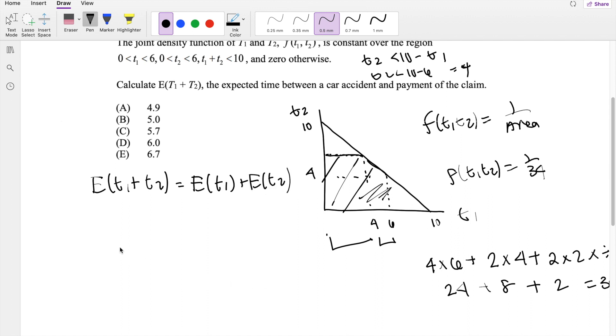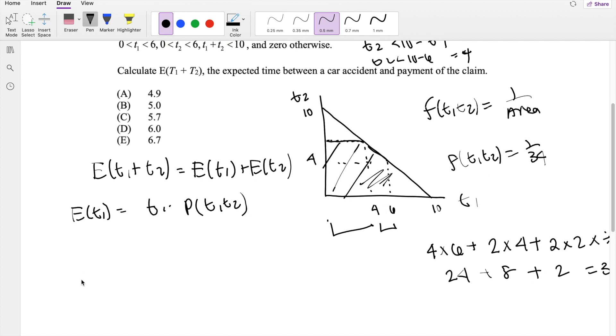So then we know that the expected value of t1 is quite easy now because we know for any value, this is equal to t1 times the probability function of t1, t2. So then we just have to figure out what the ranges are.